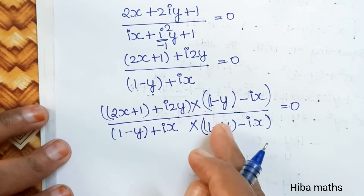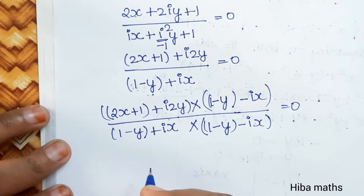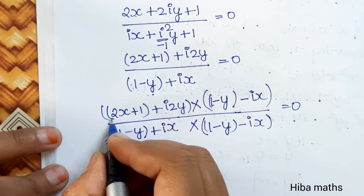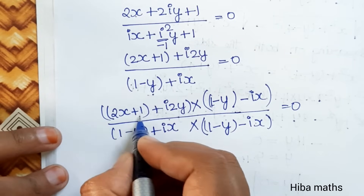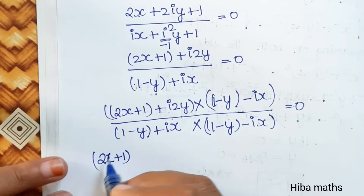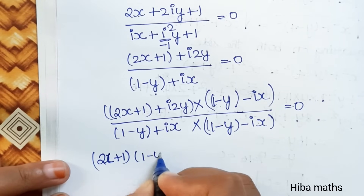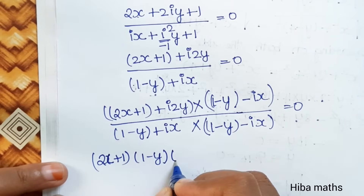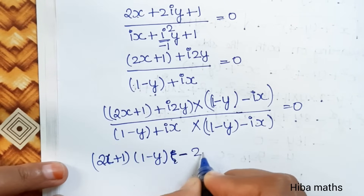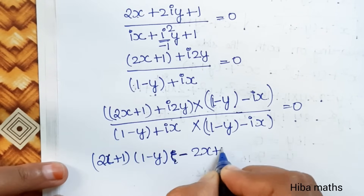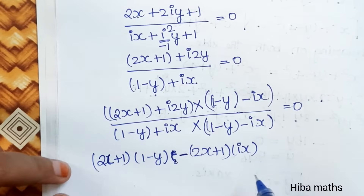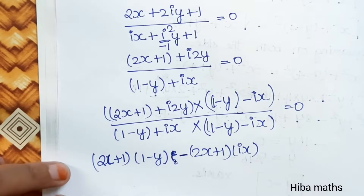Since the denominator is of the form (a + b)(a − b), we multiply inside. The numerator becomes: (2x + 1)(1 − y) minus (2x + 1)(ix). This gives us the real and imaginary parts after full expansion.